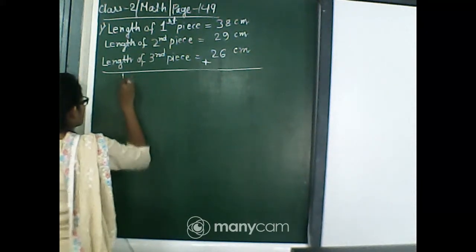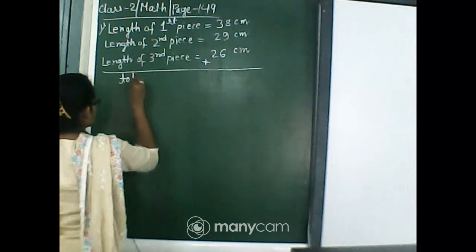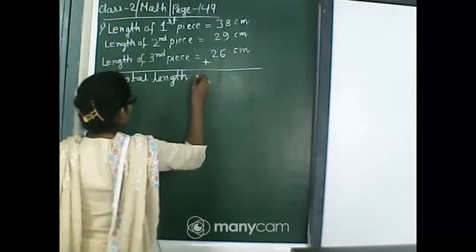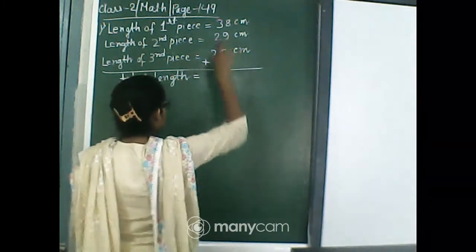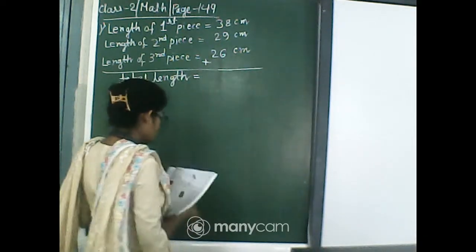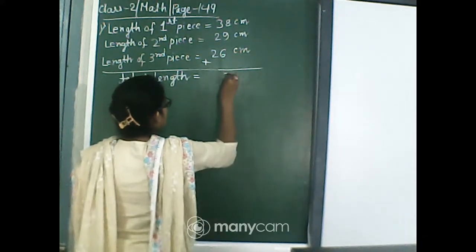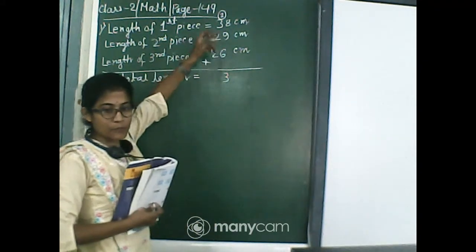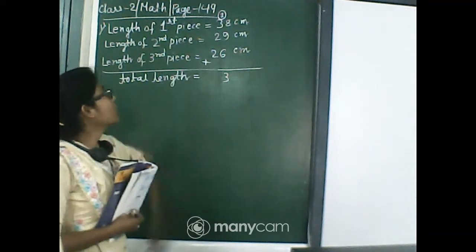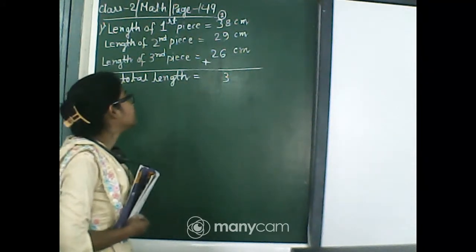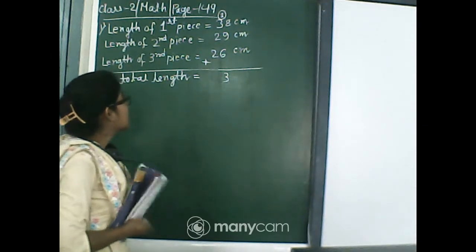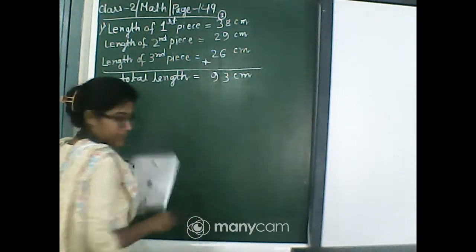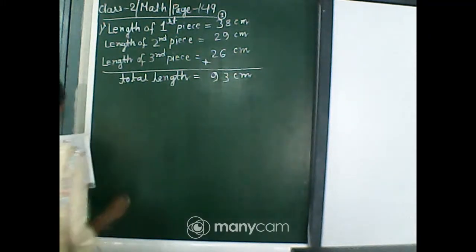We can write down here total length equal to: now 6 plus 9 is 15, 15 plus 8 is 23. So 3 is here and 2 is carry to the next number. 2 plus 2 is 4 and 4 plus 3 is 7, and 7 plus 2 carry is 9. So it is 93 cm.